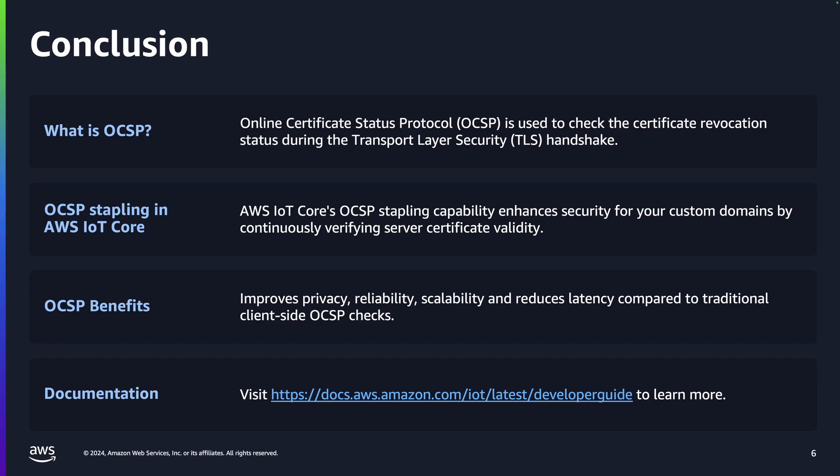To recap, online certificate status protocol or OCSP is used to check the certificate revocation status during the transport layer security handshake. AWS IoT Core's OCSP stapling capability enhances security for your custom domains by continuously verifying server certificate validity. It improves privacy, reliability, scalability, and reduces latency compared to traditional client-side OCSP checks. To start using this feature, simply enable OCSP stapling when creating or editing a domain configuration for your custom domain in the AWS IoT console or through the CLI.